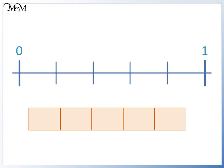Therefore, instead of counting in 0.1s, we need to count in 0.2s. The first mark on the scale will be 0.2, which is the same as one-fifth. The second mark is 0.4, which is two-fifths, then 0.6, which is three-fifths, 0.8, four-fifths, and finally one, which is five-fifths, or one whole.